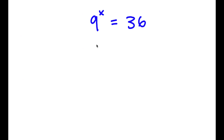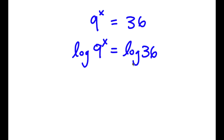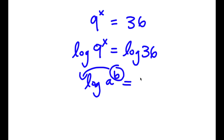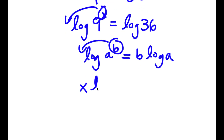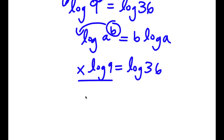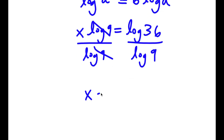In this problem, I have 9 to the power of x is equal to 36. I'm going to take the log on both sides: log of 9 to the power of x equals log 36. If I have something in the form log a to the power of b, I can move the exponent b to the front, giving b times log a. So log 9 to the power of x becomes x times log 9 equals log 36. Dividing both sides by log 9, I get x equals log 36 over log 9.